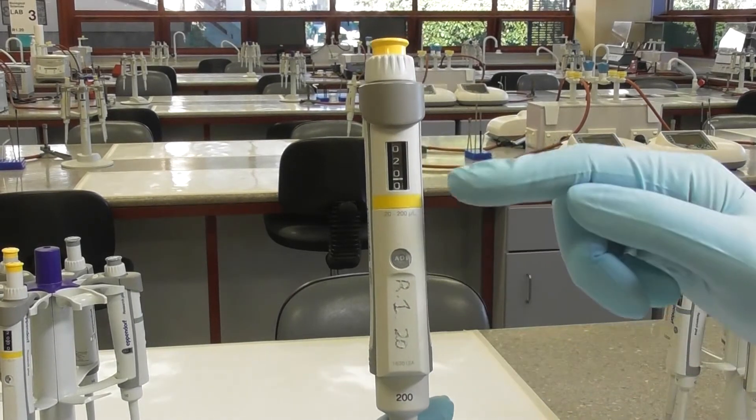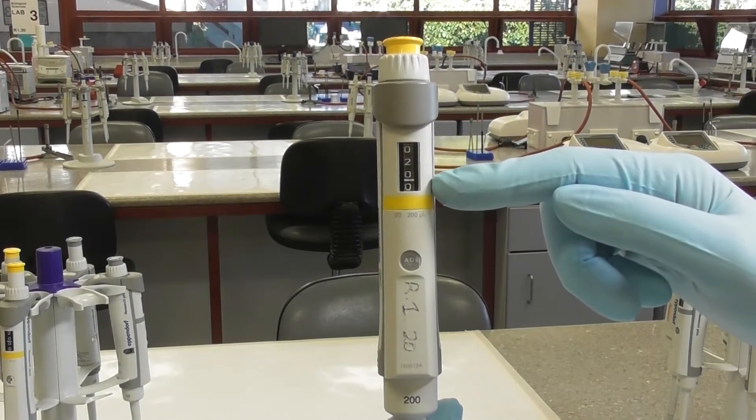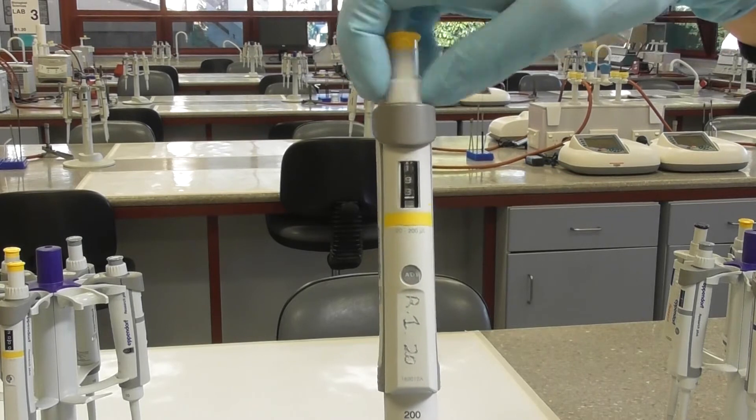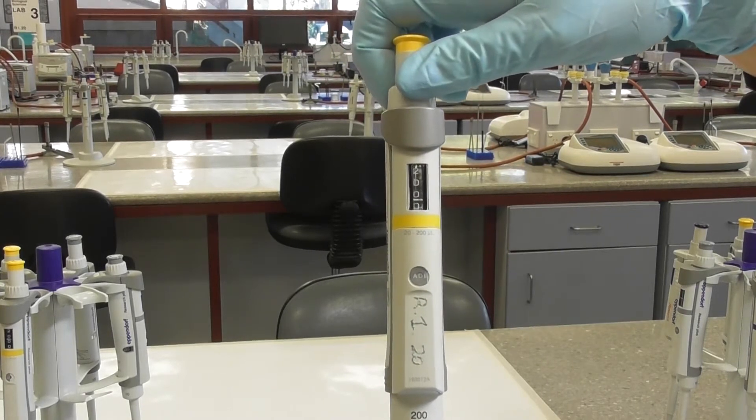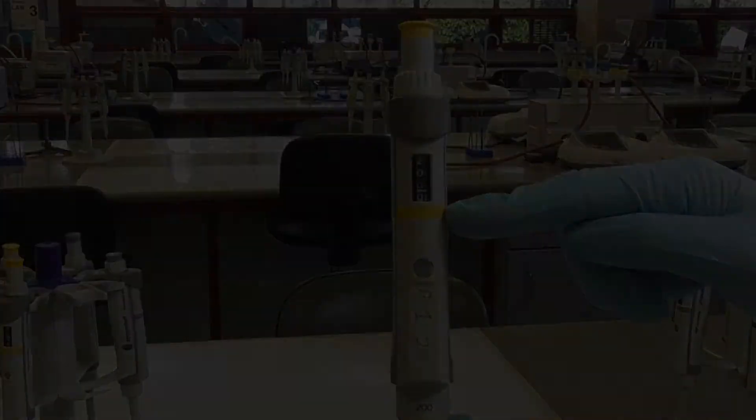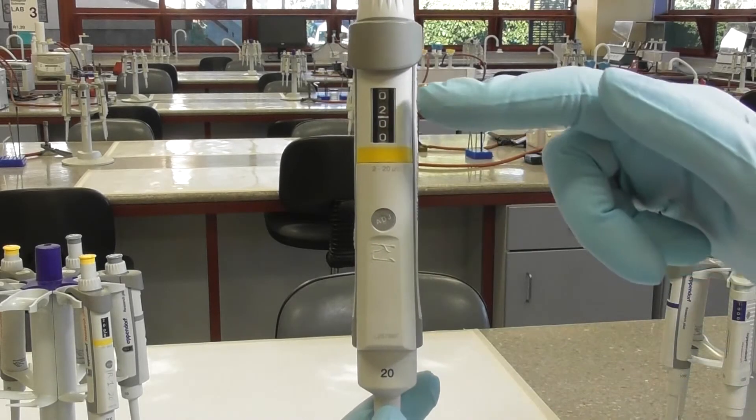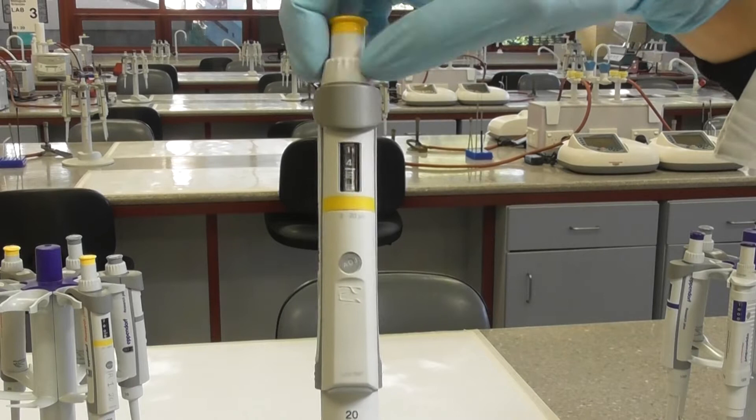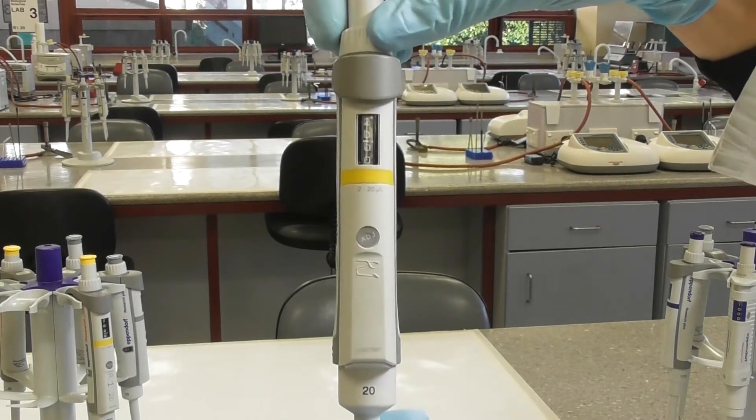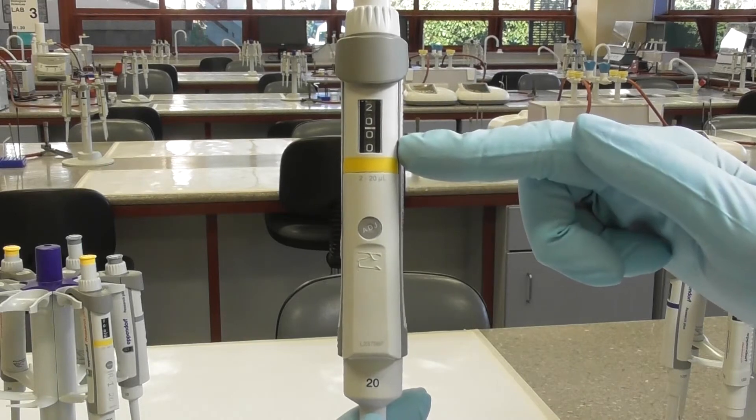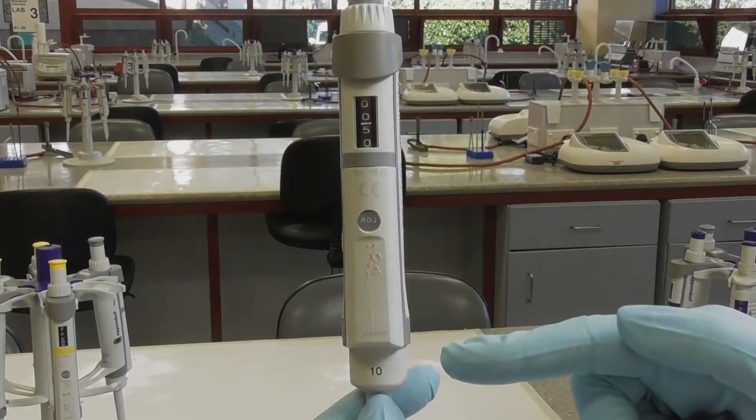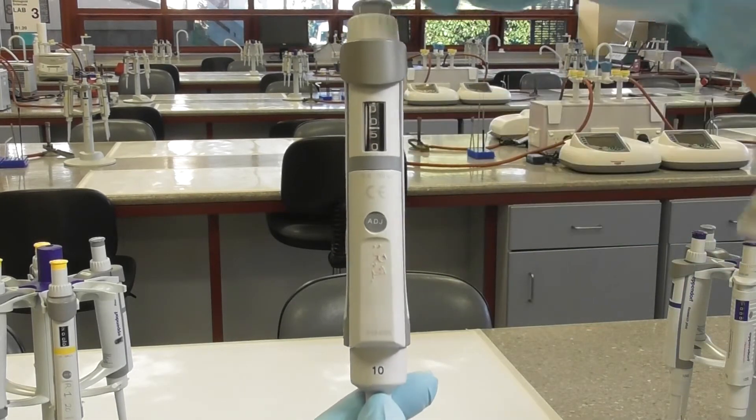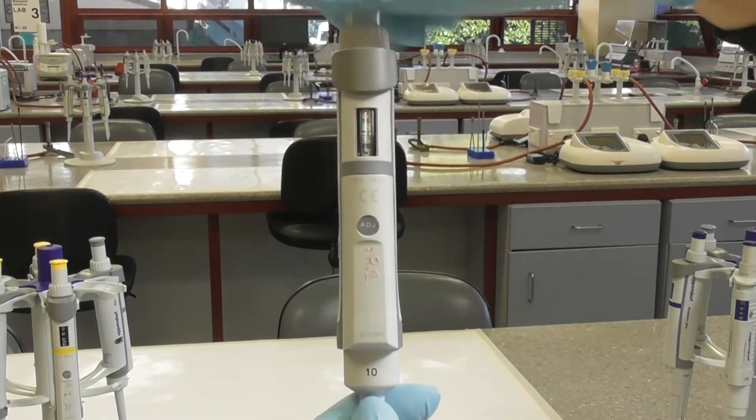The 200 microliter pipette dispenses from 20 microliters up to 200 microliters. The 20 microliter pipette dispenses from 2 microliters up to 20 microliters. The 10 microliter pipette dispenses from 0.5 microliters up to 10 microliters.